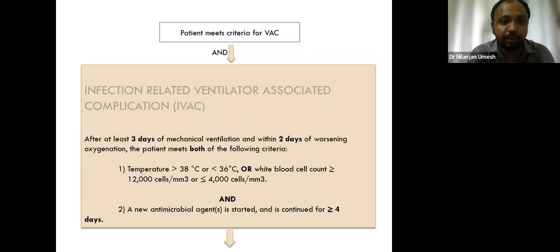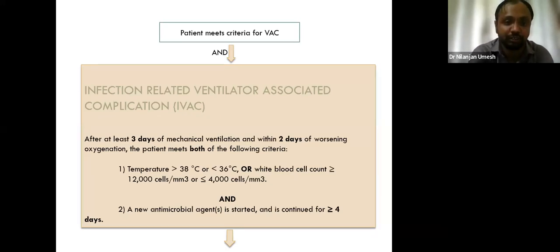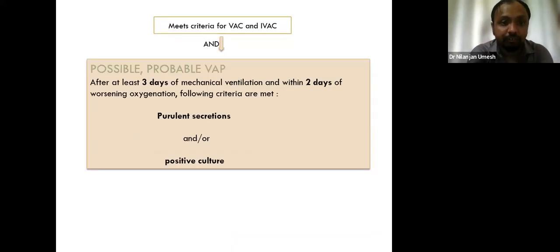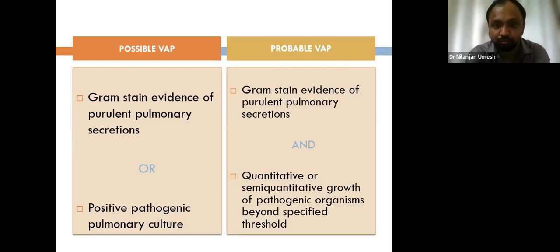If IVAC criteria are met and the patient also has purulent secretions and/or a positive culture, it is classified as either Possible or Probable VAP. Possible VAP requires gram stain evidence of purulent secretions or a positive pathogenic pulmonary culture. Probable VAP requires gram stain evidence of purulent pulmonary secretions plus quantitative or semi-quantitative growth of pathogenic organisms beyond a specific threshold.